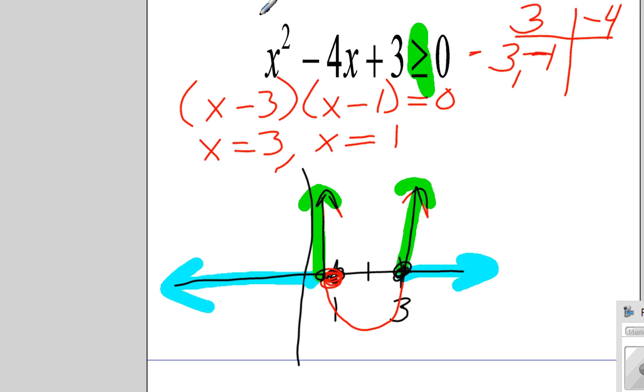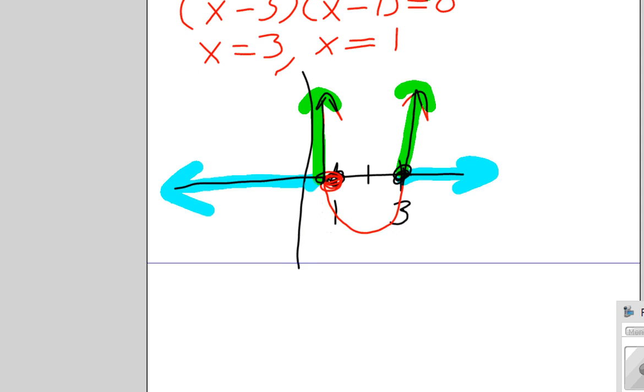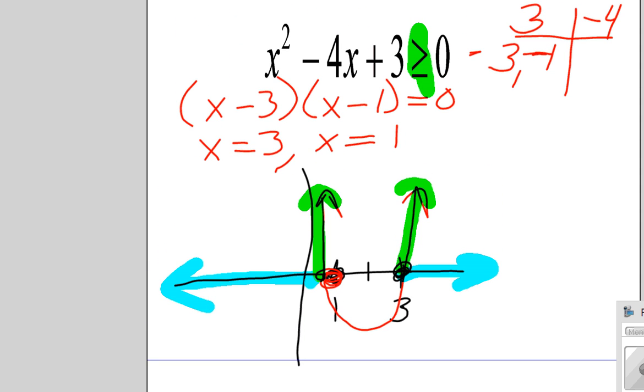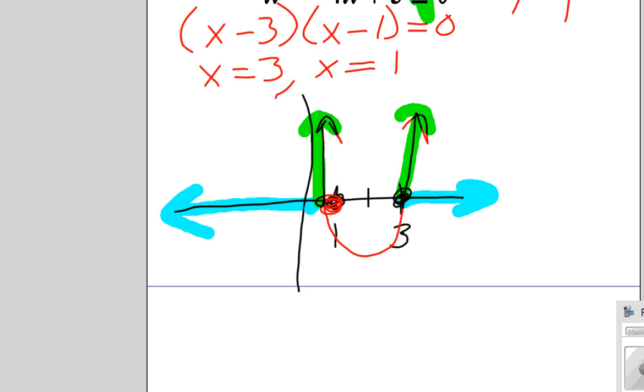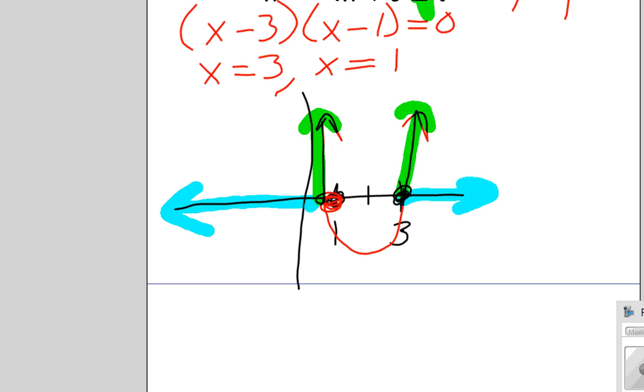All right, so this, a number cannot be both to the left of 1 and to the right of 3. This is an or inequality. So I'm going to write my closed interval. Again, it's closed with square brackets because of the line underneath the inequality. Oh, I misspoke. Let me explain why I just misspoke. So negative infinity is not a closed interval. We can never get to negative infinity. So that's going to be half open.